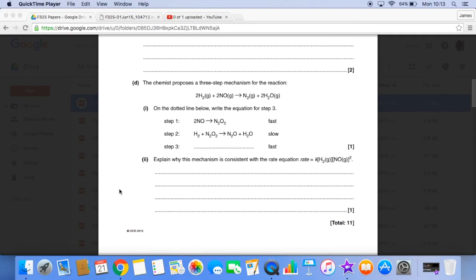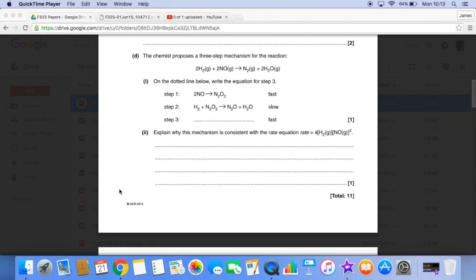And then the final part of the question. We have to use the two steps that have already been proposed for the mechanism to come up with step three. So we've got the overall equation and we've got the first two steps. And then the final part, we have to explain why the mechanism is consistent with the rate equation shown here.